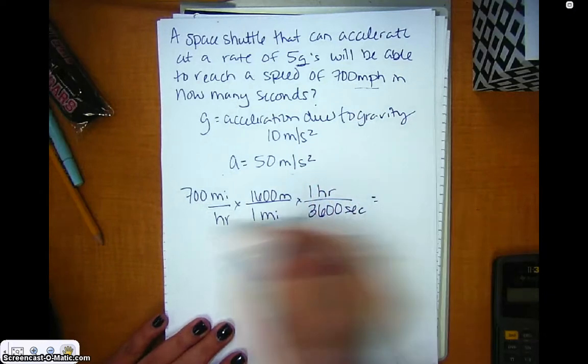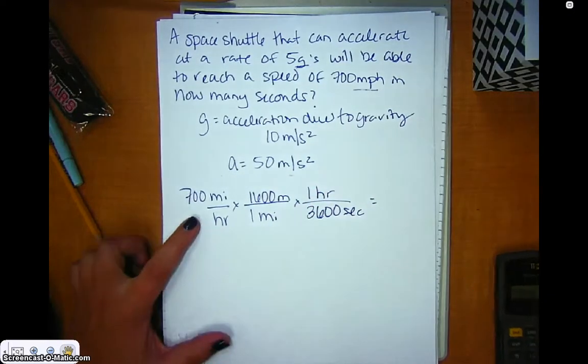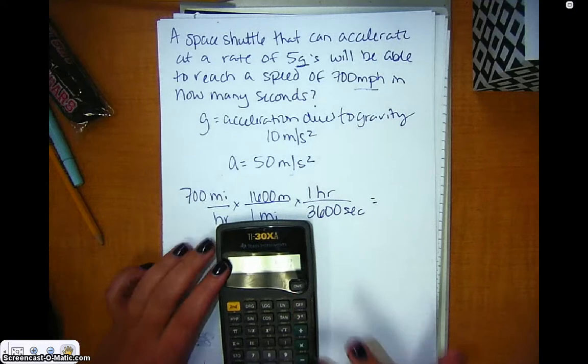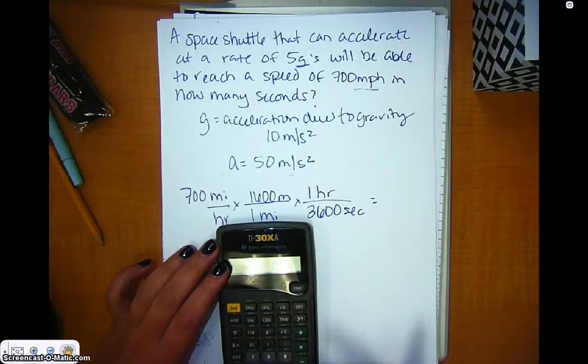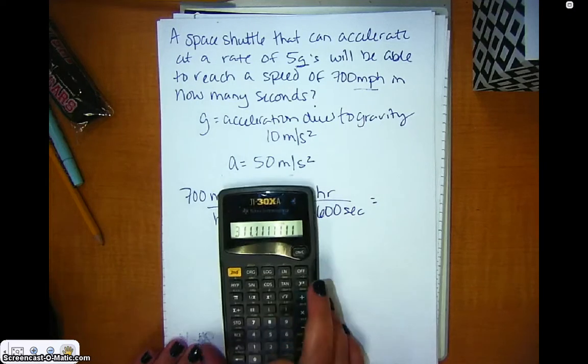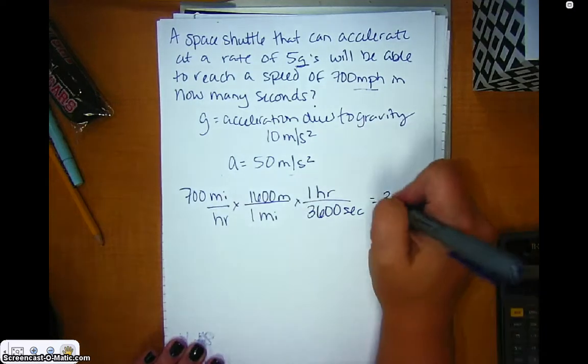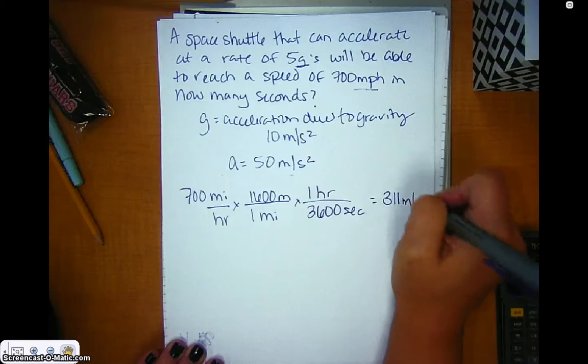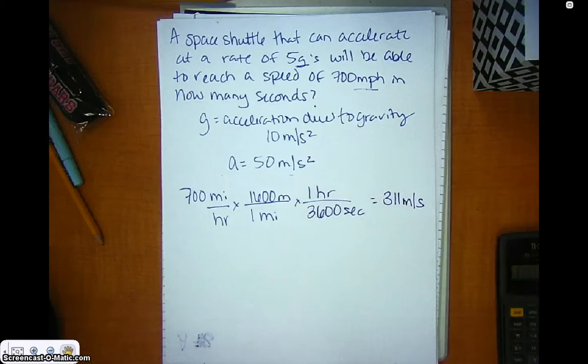This will help me get my velocity unit into the correct unit. I'm going to take 700 times 1,600, then divide it by 3,600, and I get 311. So it's 311 meters per second that the space shuttle is going to achieve.